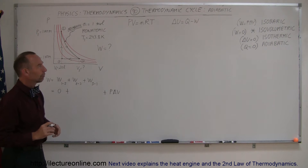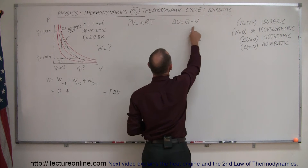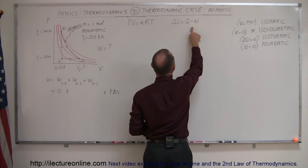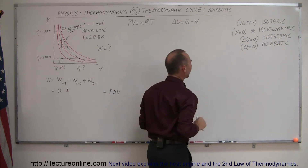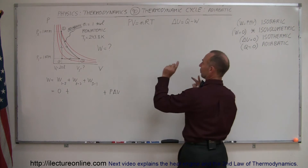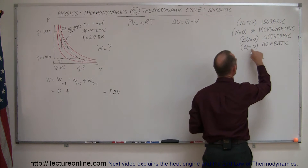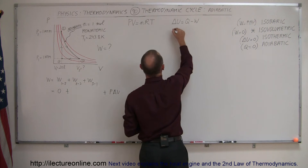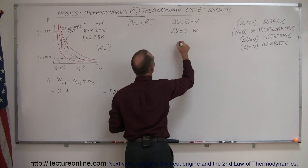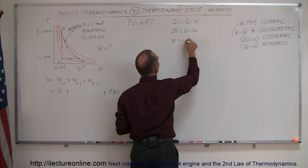So how do we find the work done going from two to three, which is an adiabatic process? We go back to the first law of thermodynamics: delta U equals Q minus W. The change in internal energy equals the heat added to the gas minus the work done by the gas. For an adiabatic process, Q is equal to zero, so delta U equals zero minus W, which means W equals minus delta U.